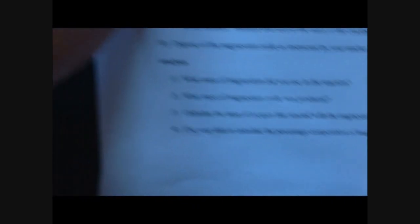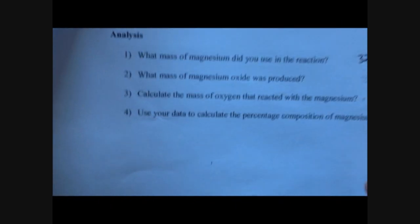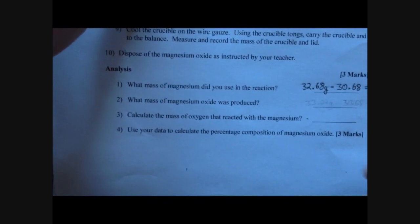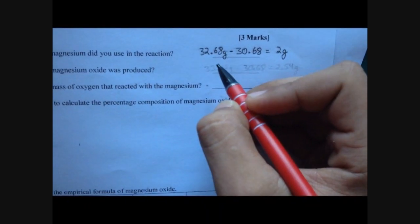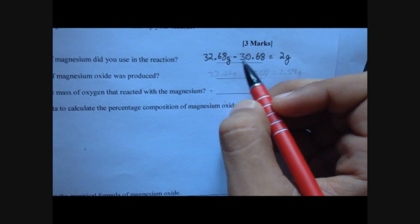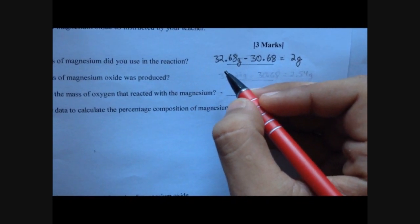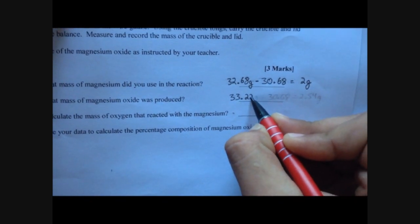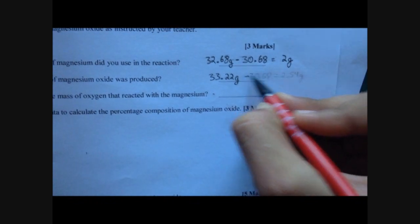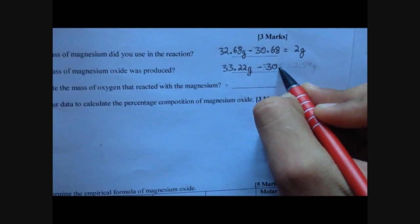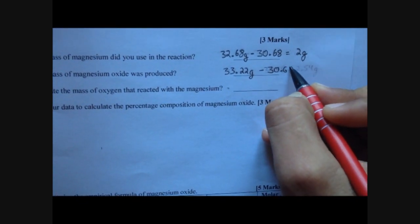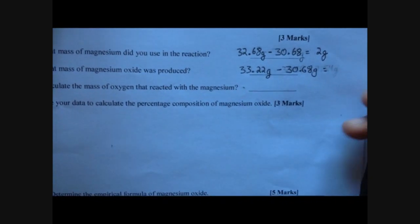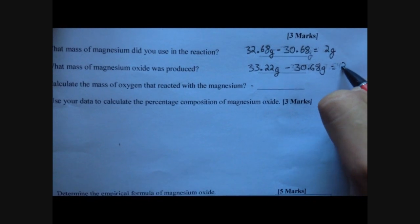Question 2: What is the mass of magnesium oxide produced? To calculate that, take the mass of crucible, lid and magnesium oxide — 33.22 grams — and subtract the mass of the clean crucible and lid — 30.68 grams. This gives you 2.54 grams.